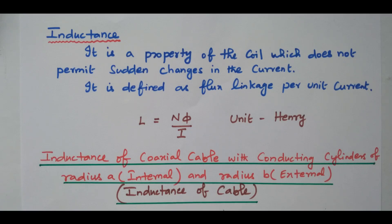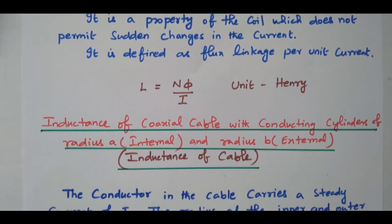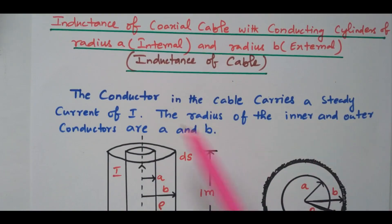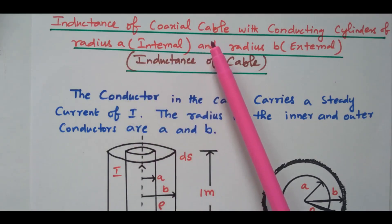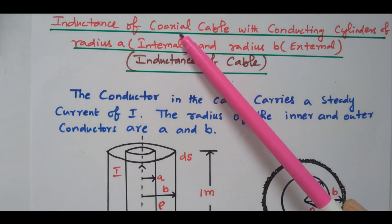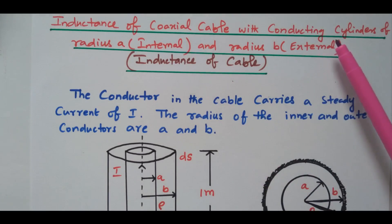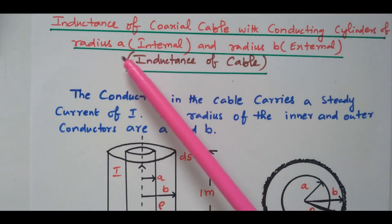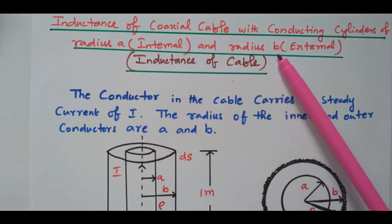Now we will see the inductance of a coaxial transmission line. A coaxial cable contains two conductors — inner and outer conductor. The axis is the same for both conductors, that is why it is called a coaxial cable. It has inner conductor radius A and external conductor radius B. It is an underground cable.